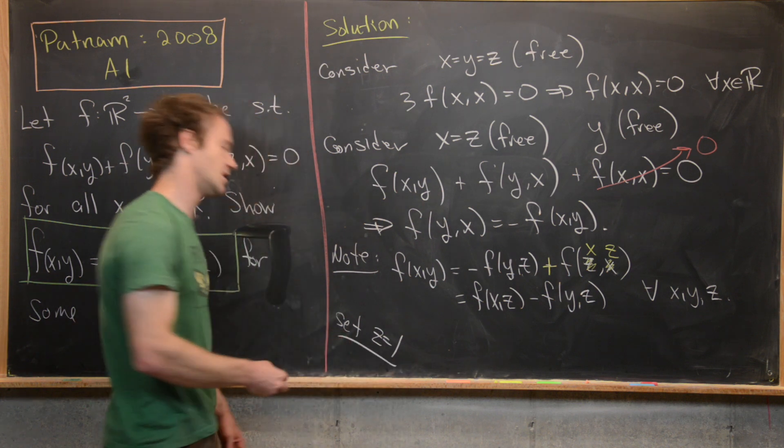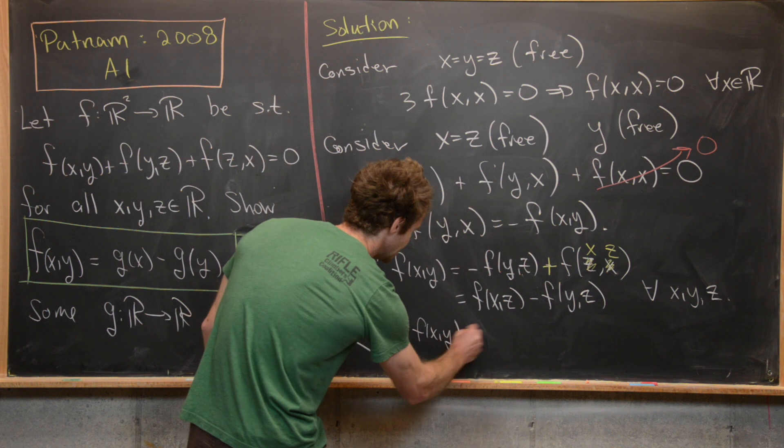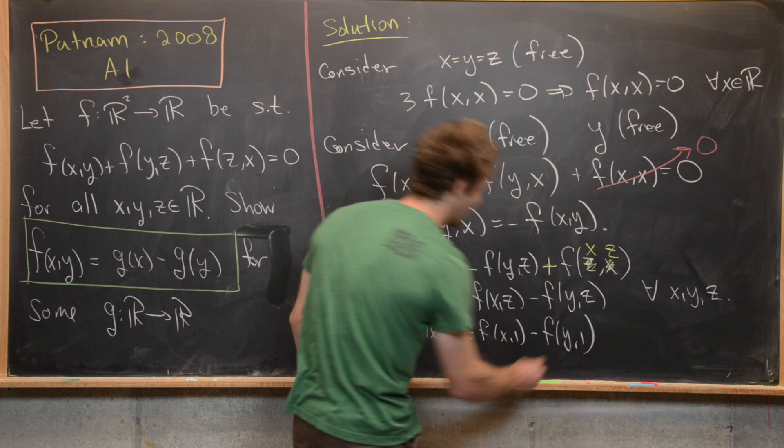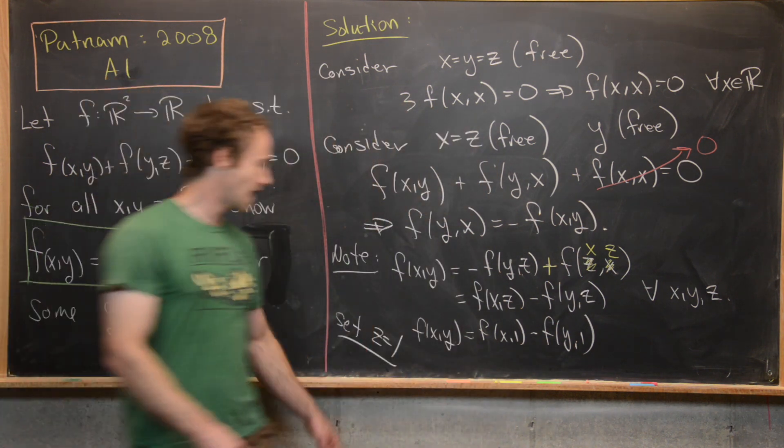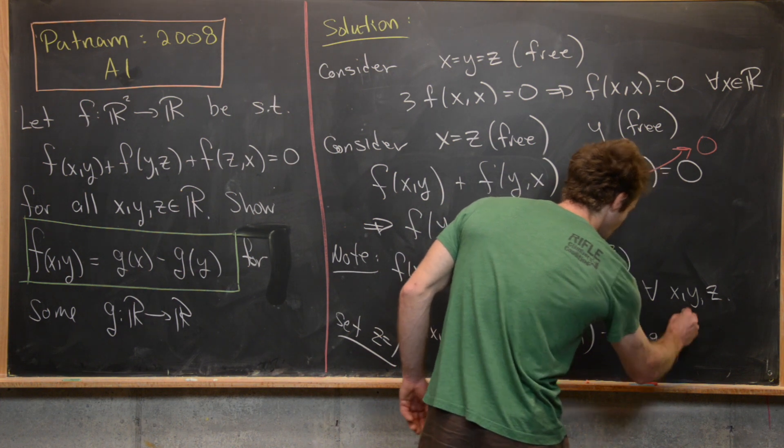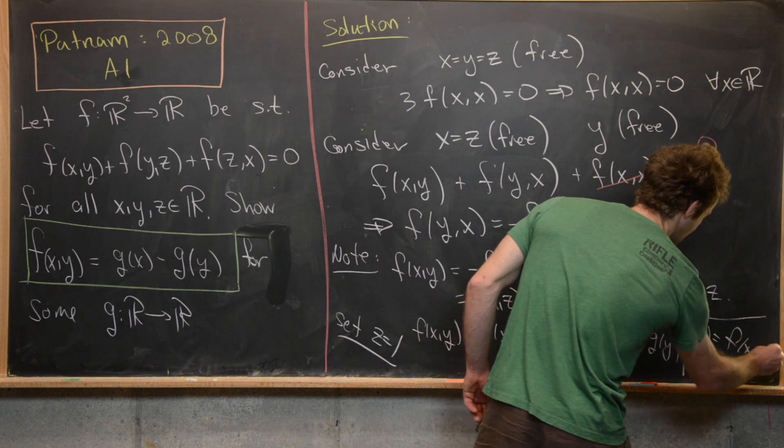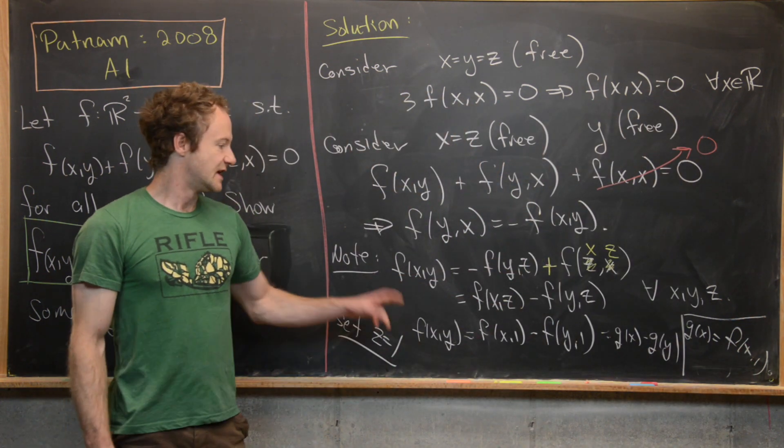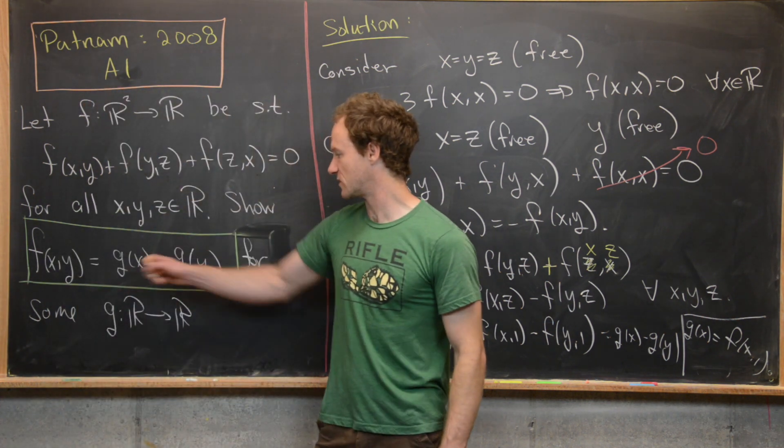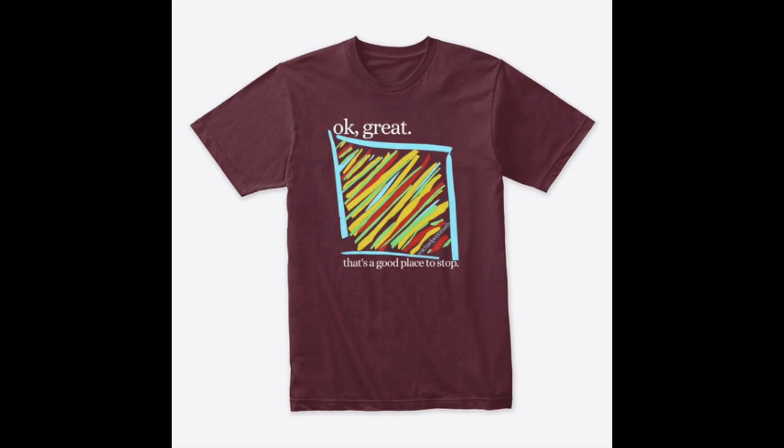So maybe we'll choose z equals one because it's kind of nice. And notice that that gives us f(x,y) equals f(x,1) - f(y,1). But we can just say that that's equal to g(x) - g(y), where g(x) equals f(x,1). So we found our function that we can use to break f(x,y) into a difference of that function evaluated at x and that function evaluated at y. And that's a good place to stop.